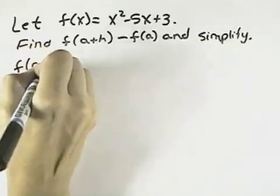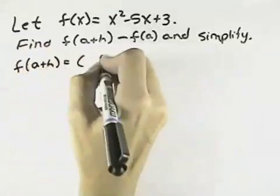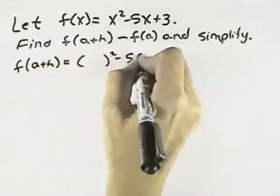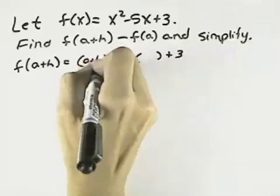First let's find f of a plus h. So that means we have our function f, but we take out the x's and we replace them with a plus h.